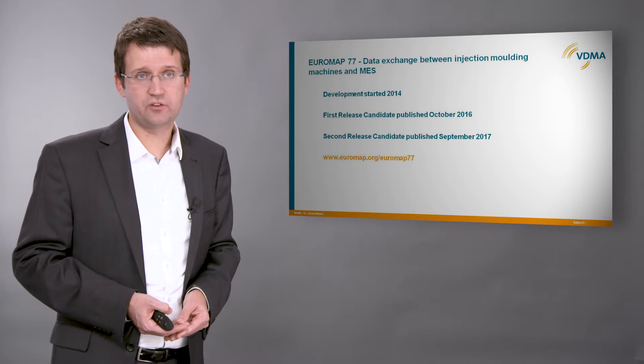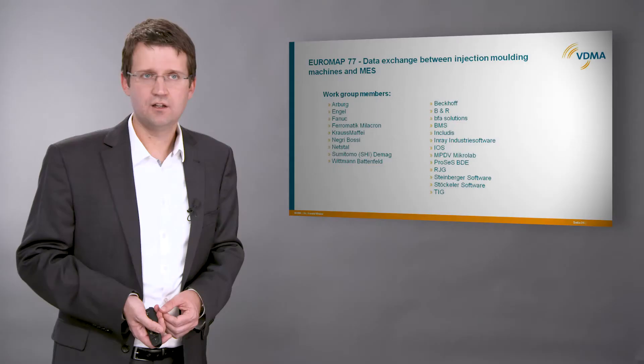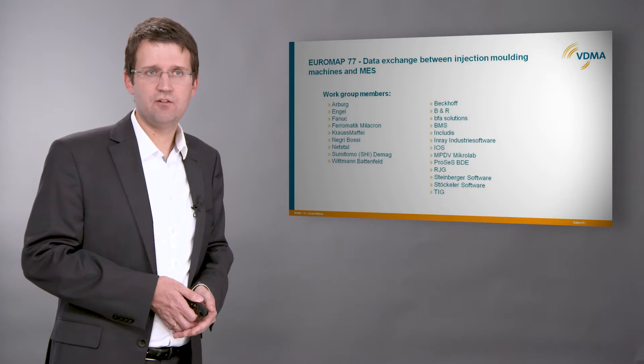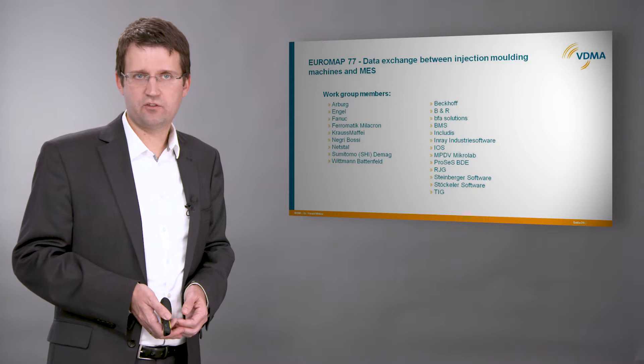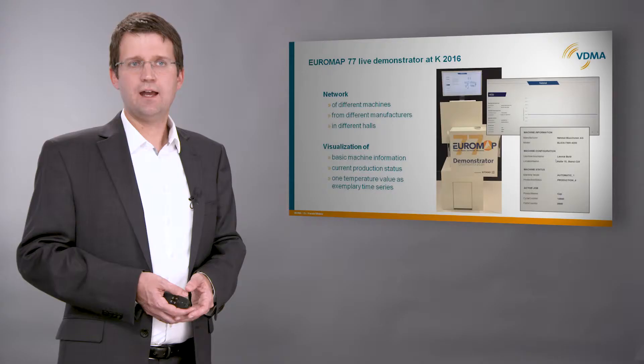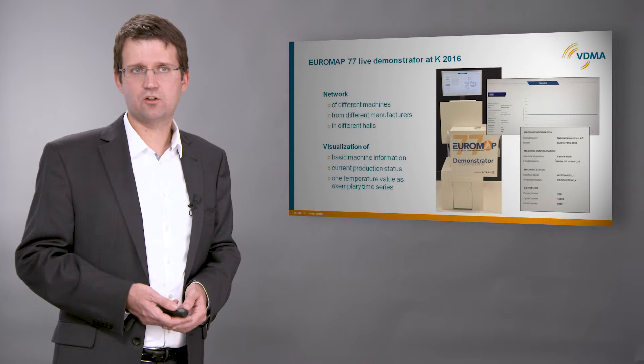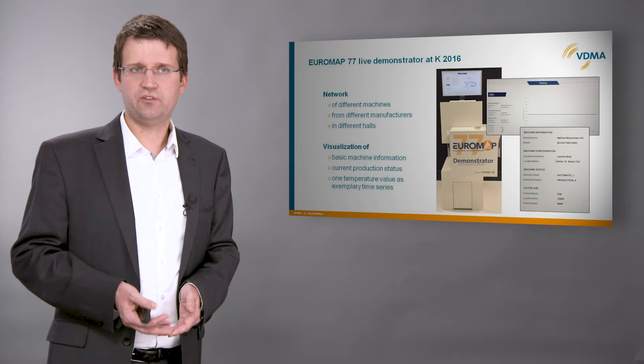Euromap 77 is the most advanced project. As mentioned, the development started in 2014. In September 2017, we released the second release candidate, which is available for free on our website. Euromap 77 is developed jointly by over 20 companies. Most of the work is done by the manufacturers of injection molding machines, where all major European companies are represented. Also manufacturers of MES and automation systems were involved. All these companies were absolutely pulling together to create a comprehensive standard independent from one single manufacturer. This was demonstrated at the world-leading exhibition on plastics and rubber, the K show in October 2016, where a network across different halls with machines from different manufacturers was set up, and an OPC UA client was able to receive selected values from the running machines.